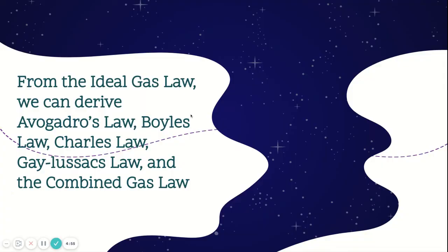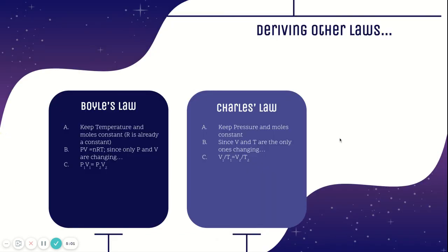From the ideal gas law, we can derive Avogadro's Law, Boyle's, Charles', Gay-Lussac, and Combined Gas Law. So these are the individual laws. So for Boyle's Law, we would start with the ideal gas law. And then Boyle's Law keeps temperature and moles constant. So here's the PV equals nRT. If moles, which is n, and temperature, which is T, is constant, R is already a constant, so that means PV is the only thing changing.